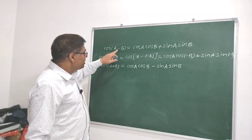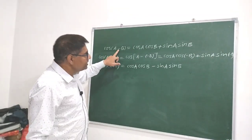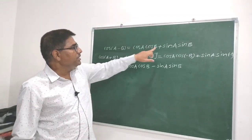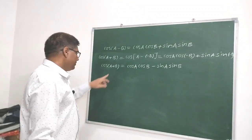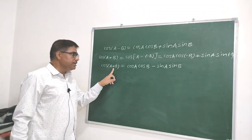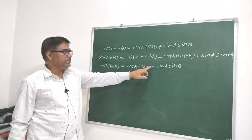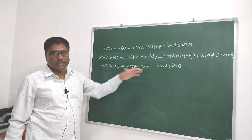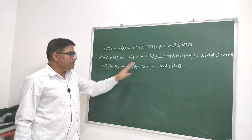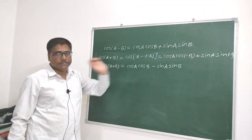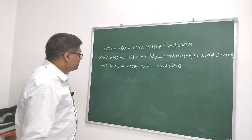Notice that if we have minus sin in cos(A-B), then we get plus sin in cos(A+B), and if we have plus sin in cos(A-B), then we get minus sin in cos(A+B). The opposite sign will appear.